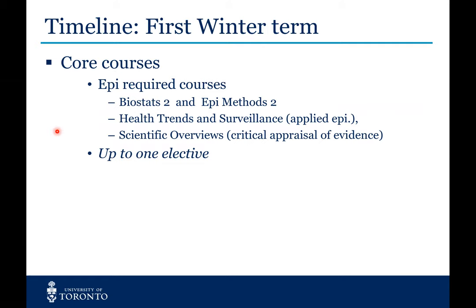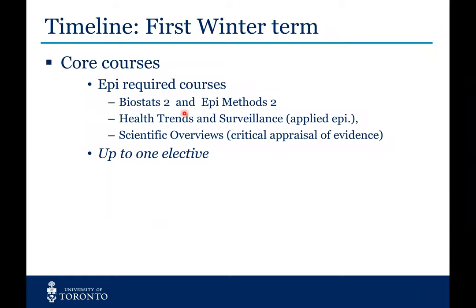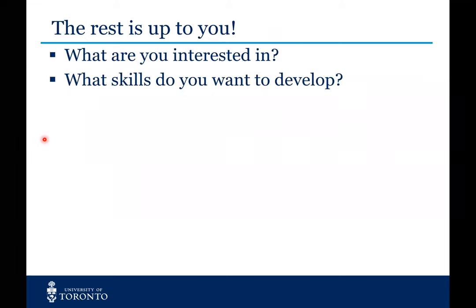The winter term builds solidly on the first term, where you take a second biostatistics and a second epi methods course, and then you cover a course related to surveillance and critical appraisal. The rest, really after that, is up to you. Once you've completed those first two terms, you've completed all of the required courses, so now you can decide where you want to go — what you're interested in and what skills you want to develop.